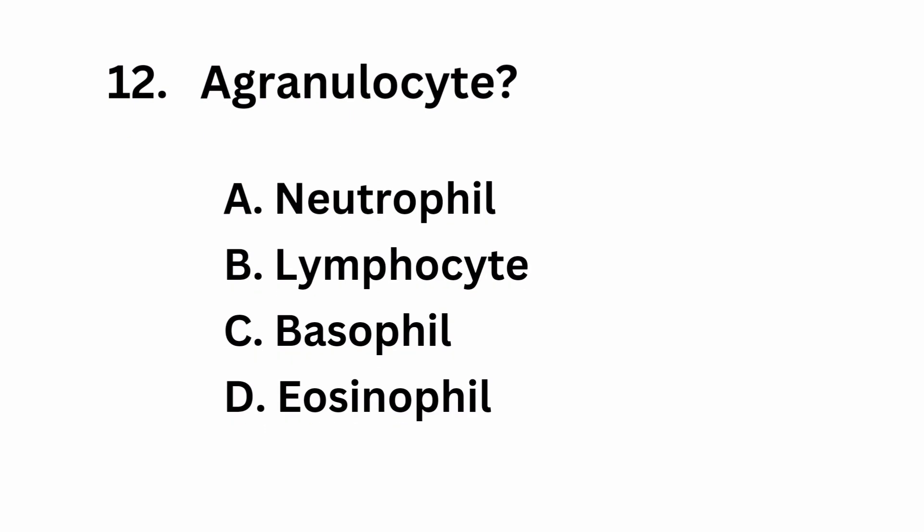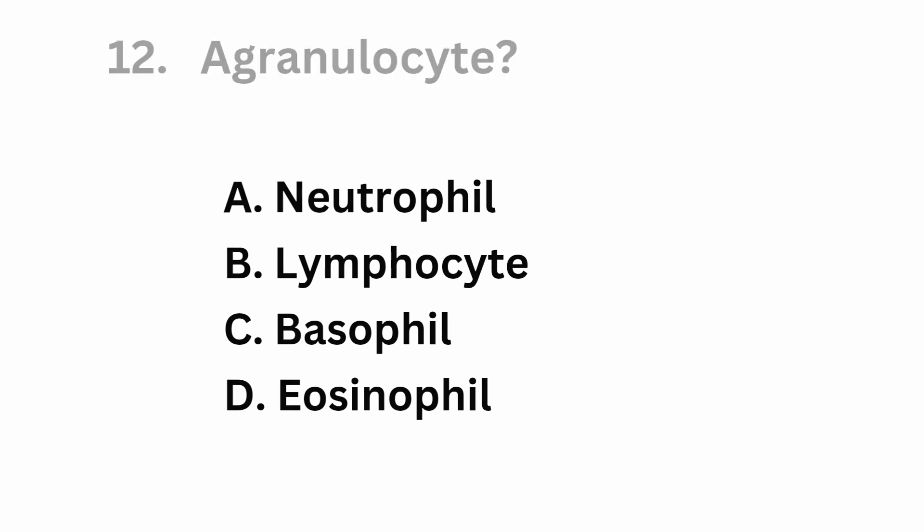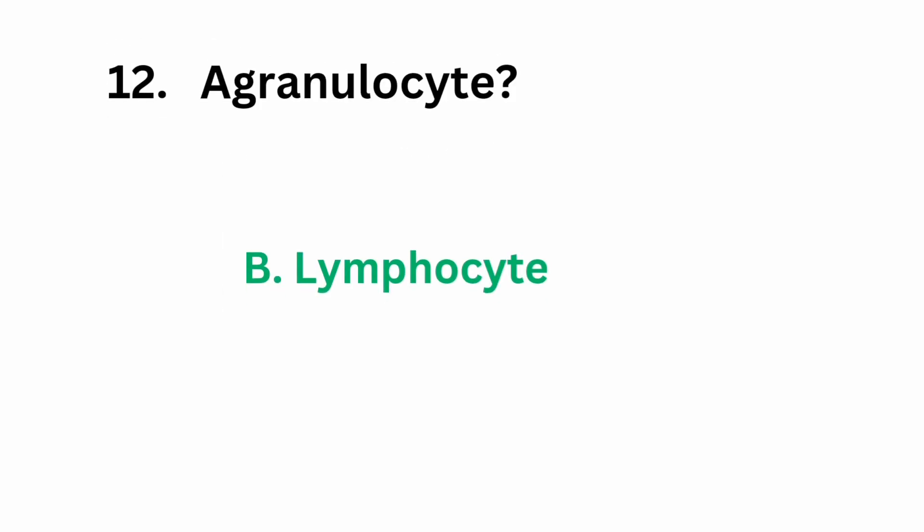Question number 12: egg granulocyte. Which among the following is an egg granulocyte? Option A, neutrophil. Option B, lymphocyte. Option C, basophil. Option D, eosinophil. The correct answer is option B, lymphocyte, in which there are no granules in their cytoplasm.